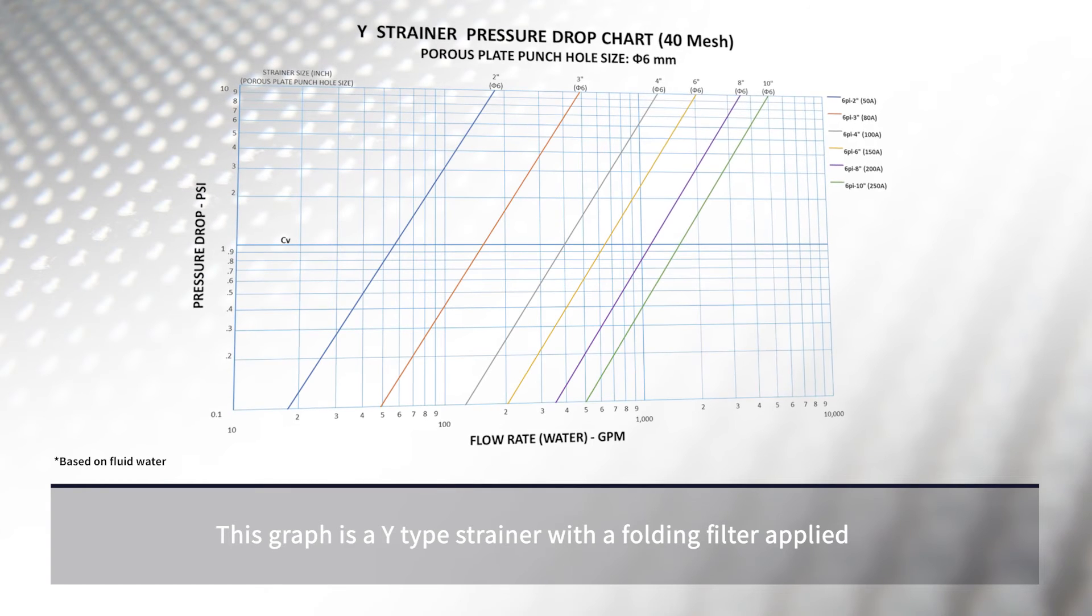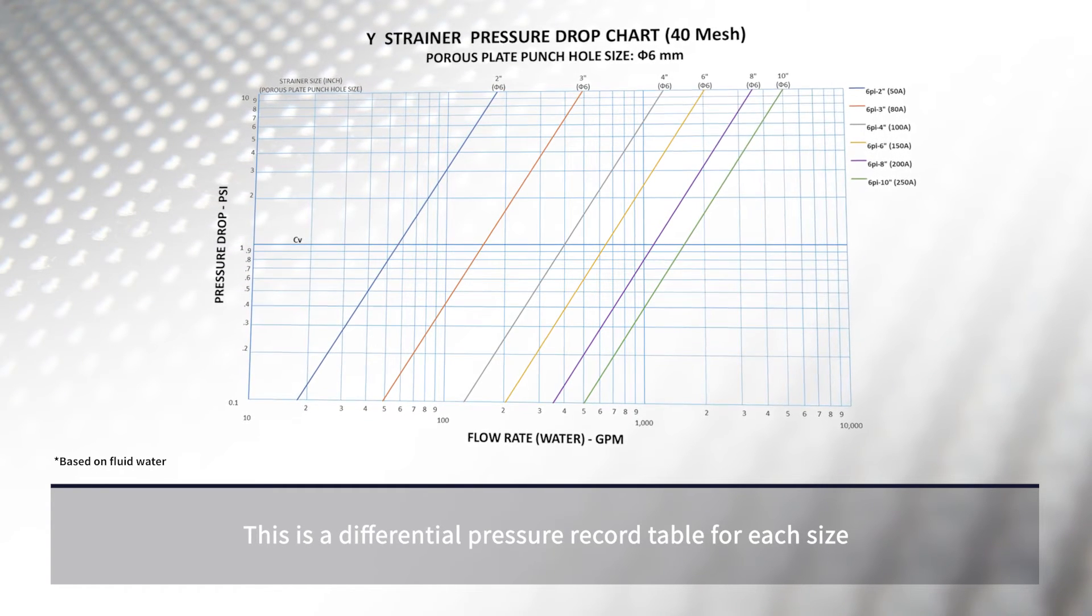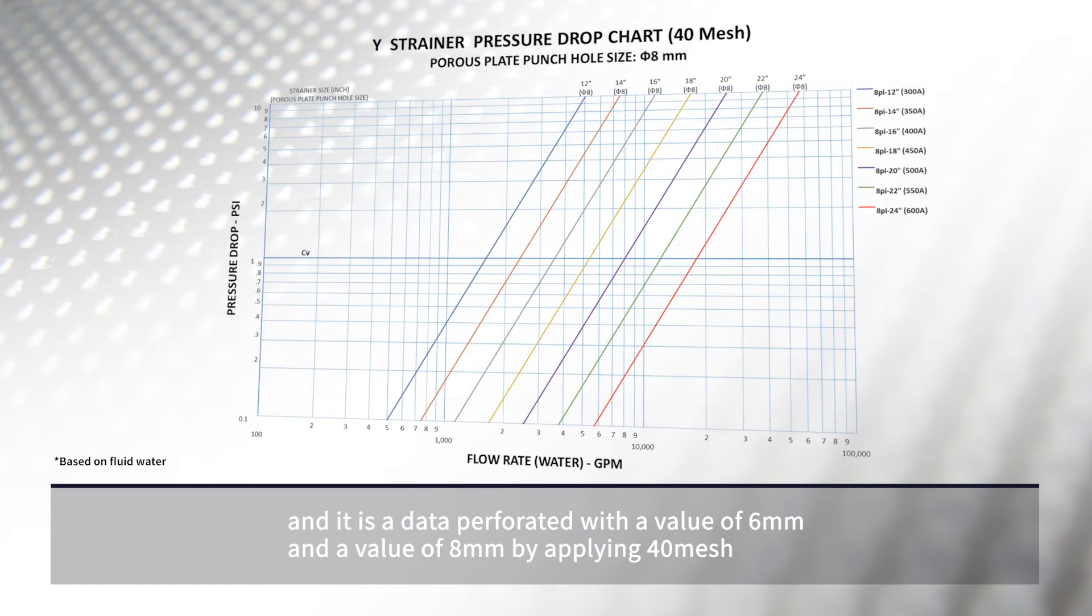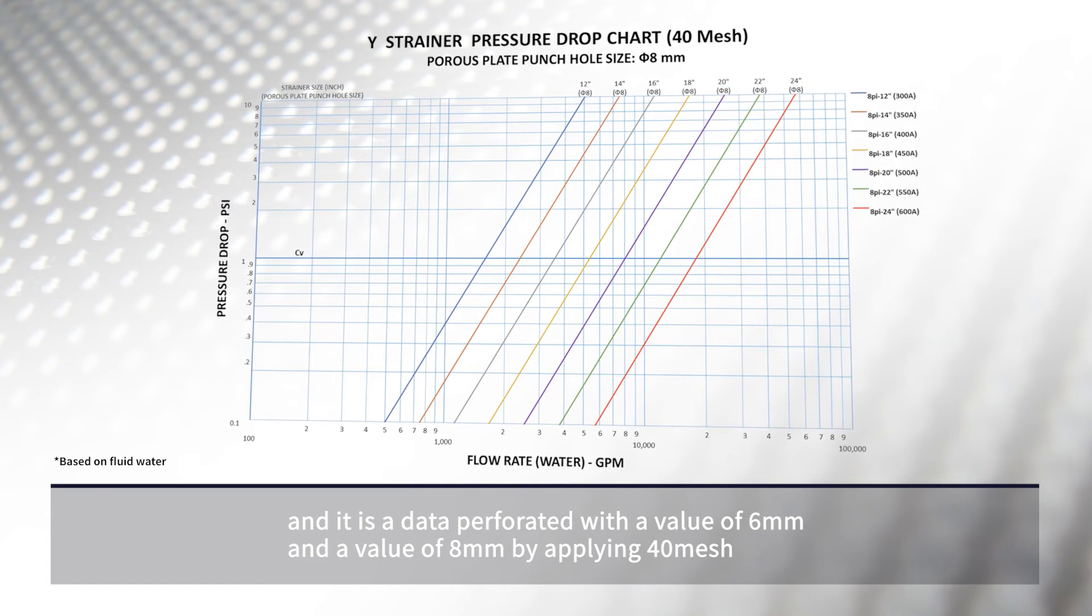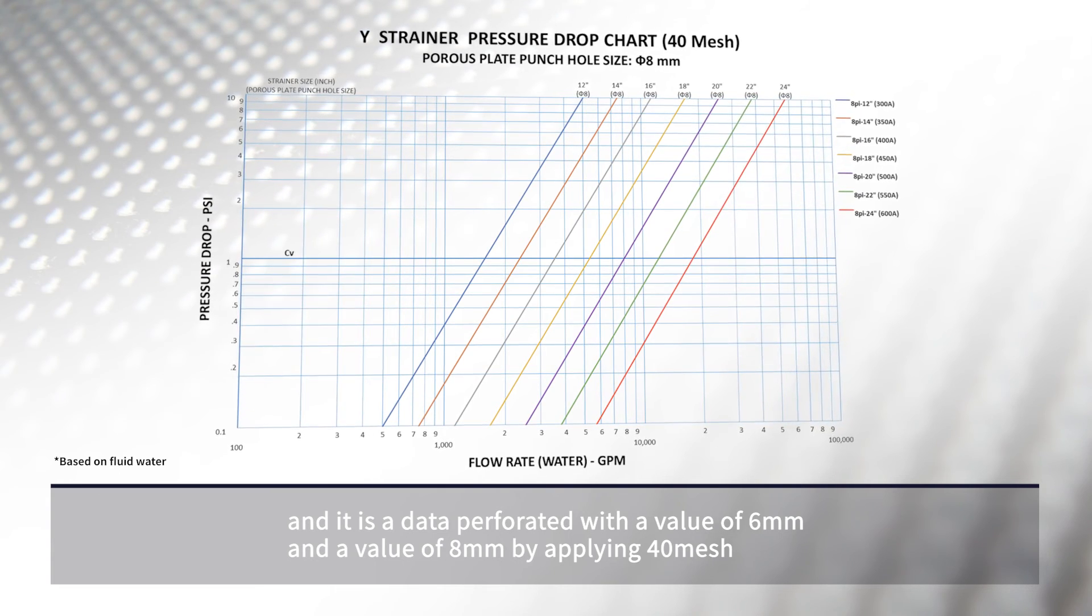This graph is a Y-type strainer with a folding filter applied. This is a differential pressure record table for each size, and it is data perforated with a value of 6 millimeters and a value of 8 millimeters by applying 40 mesh.